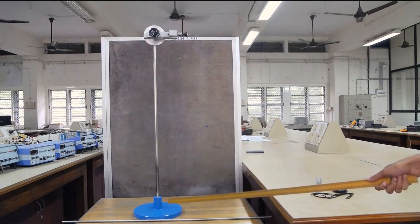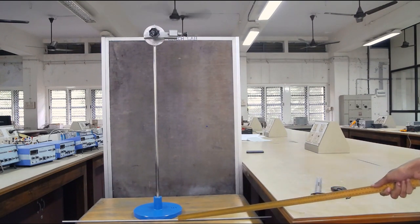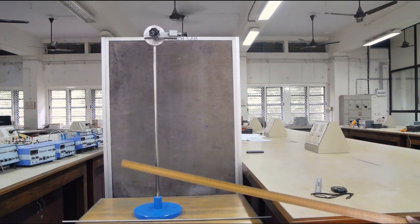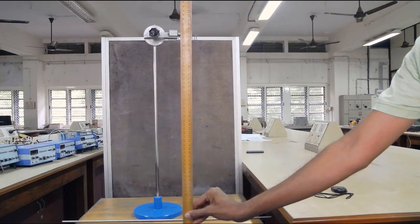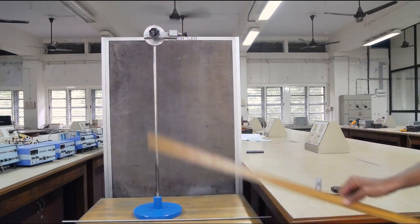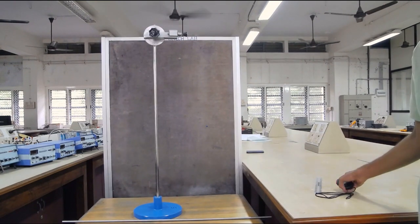The apparatus required for this experiment are a compound pendulum setup with a one meter long rod, a meter scale to measure the length, and a stopwatch to measure the time period of oscillation.